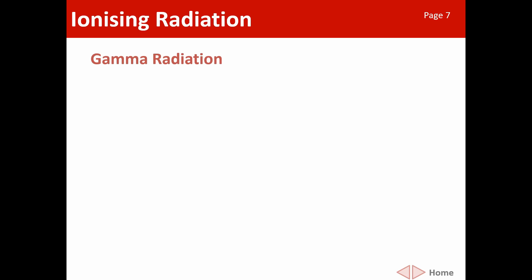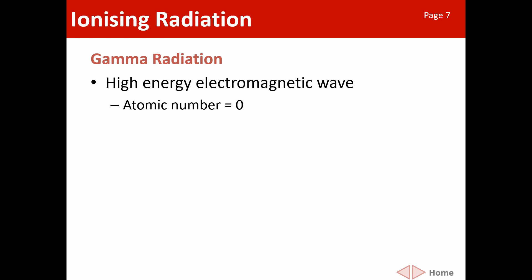Our third form of ionizing radiation is gamma, and it's very different because it is not a particle. Alpha was two protons and two neutrons; beta was an electron; gamma is an electromagnetic wave — just a burst of energy in wave form, similar to light, X-rays, or radio waves. As such, it has no atomic number and no mass number because it is not a particle, so it actually has zero mass.